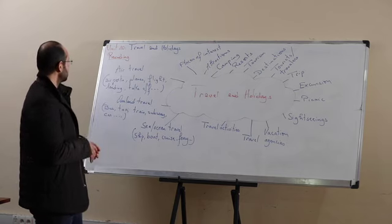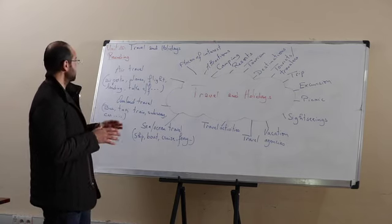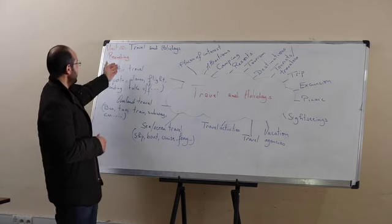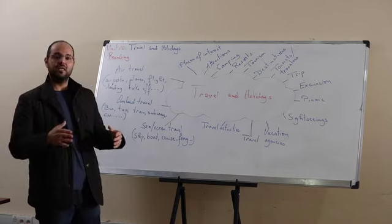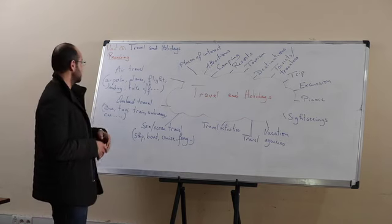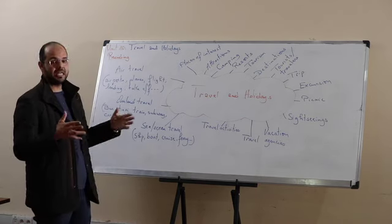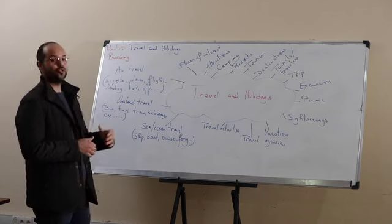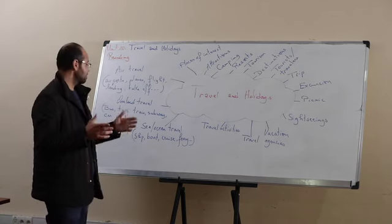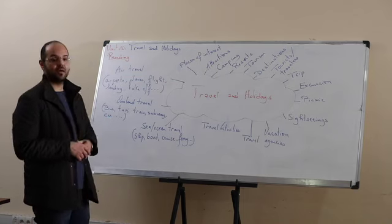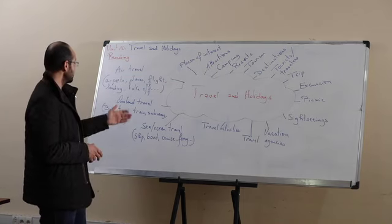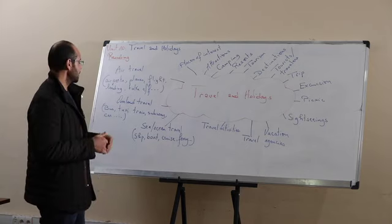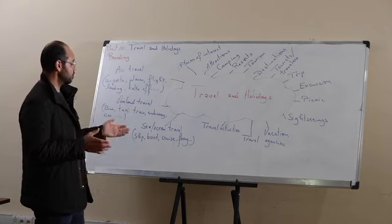Means of transportation is divided into three main categories. The first is air travel, which has to do with airports, planes, taking off, landing, and flights. The second category is overland travel, which has to do with buses, taxis, trains, subways, and cars. The last one is sea and ocean travel, which has to do with ships, boats, cruises, and ferries.